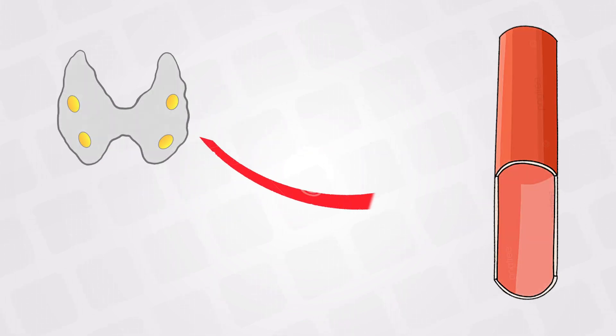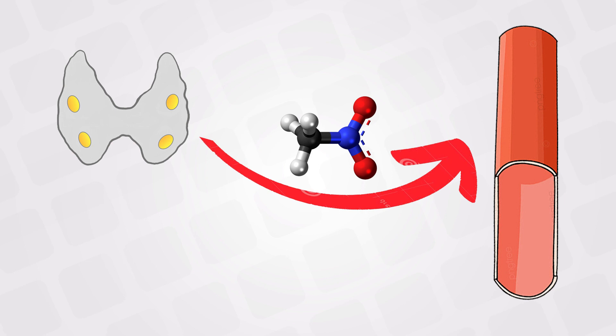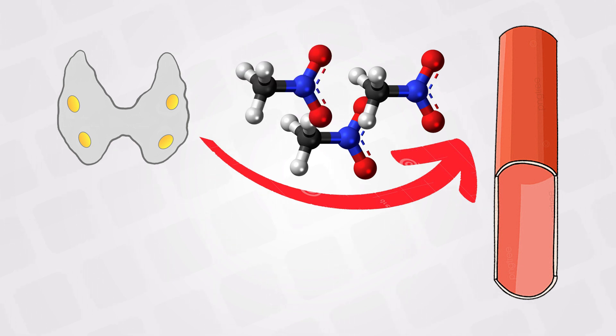The parathyroid gland releases parathyroid hormone to increase the levels of calcium in the blood. So naturally, if we have low calcium in the blood, the parathyroid gland will sense this hypocalcemia and will secrete more parathyroid hormone. And of course, the parathyroid hormone increases calcium in the blood.